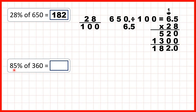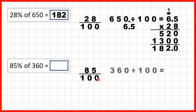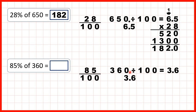Now we have 85% of 360. 85% is 85 hundredths, and if we start by dividing 360 by 100 we get 3.6. We can put the decimal point on the end, copy it down, move the digits, and cross out the end zero. Or we can imagine the decimal point on the end and move it two places to the left to get 3.60, written as 3.6. Now we need to multiply by the numerator, so multiply by 85.